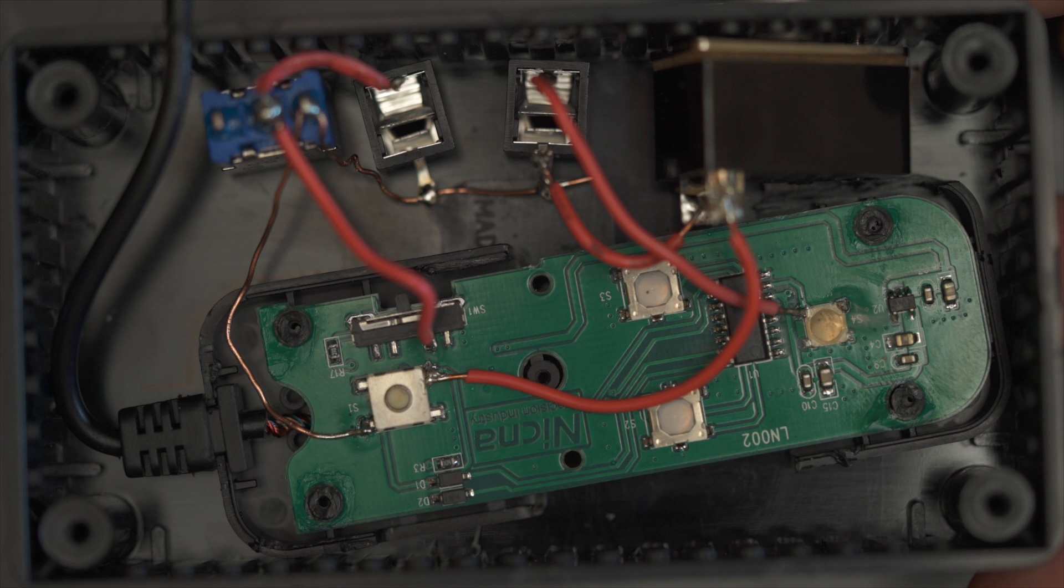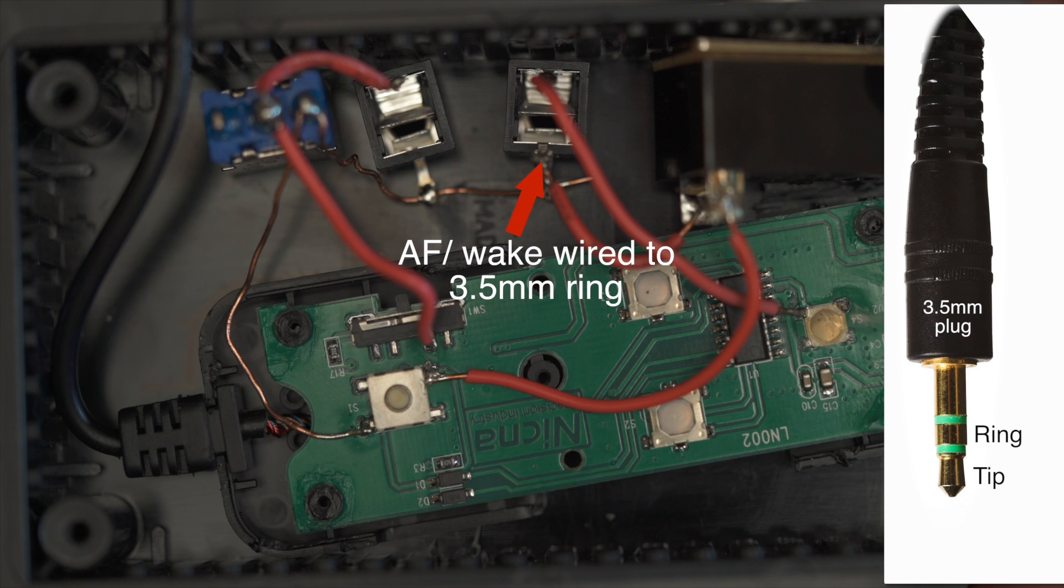For the second socket, I actually wired two functions. First of all, an autofocus signal or a wake signal if the camera had been put to sleep by the first socket. And then the second function I wired to this second socket was a start record signal.